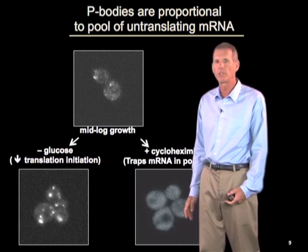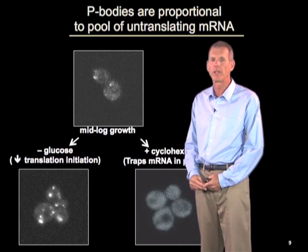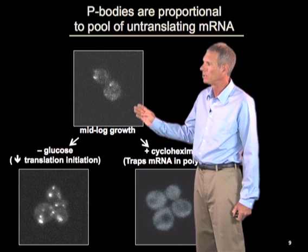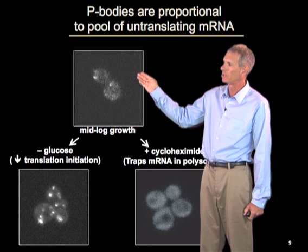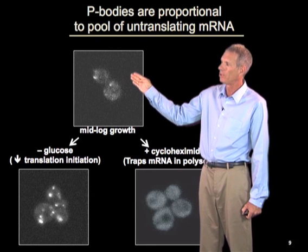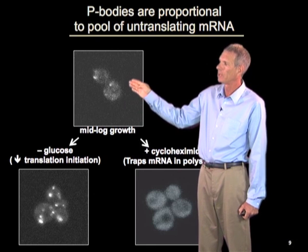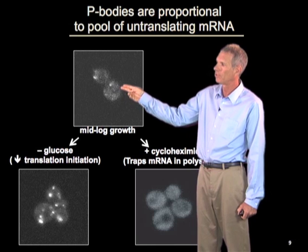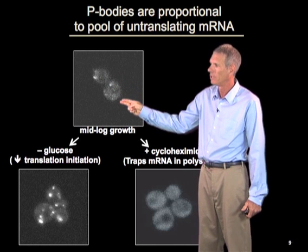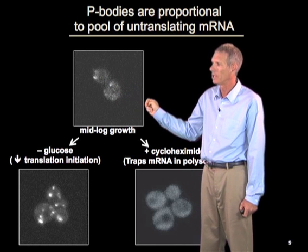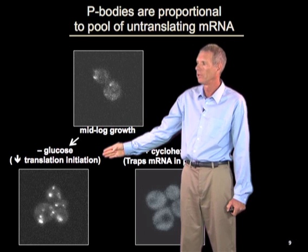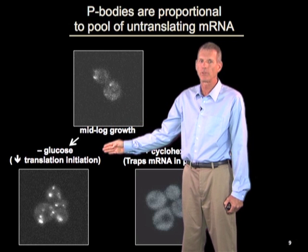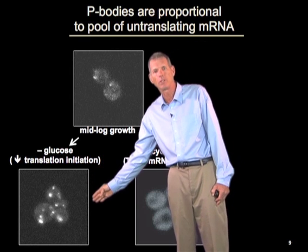P-bodies are proportional to the pool of untranslating RNAs. Looking at yeast cells during mid-log growth, you can see a few p-bodies of moderate size. However, if we starve those cells for glucose, this leads to a rapid loss of translation, and you can see that the p-bodies get quite a bit larger.